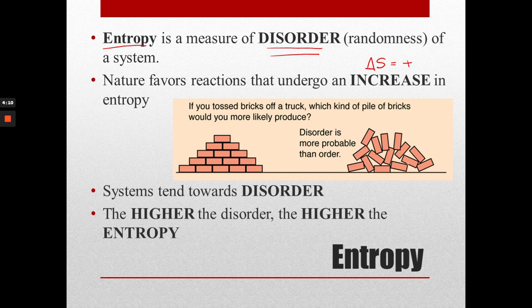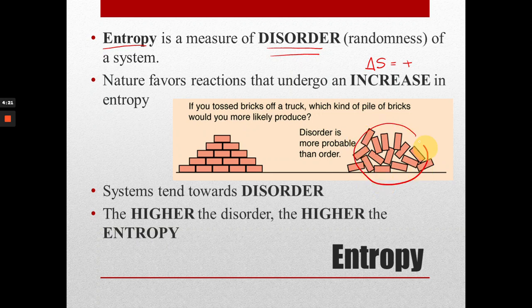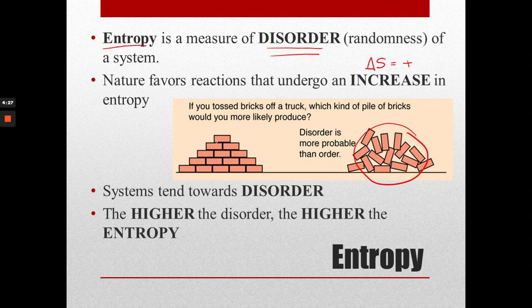And this is a common example that you will see. If you were to take a load of bricks off of the back of a truck, what kind of pile would you most likely produce if you just dumped them? This one. This is the natural way that they would probably fall. They're not going to fall in a nice, neat stack. That's not how nature works. This is how man works. We plan cities and we plan our homes to be nice and orderly, but the natural state of things is much more disordered. So systems always tend towards disorder. And the higher the disorder, the higher the randomness, the higher the entropy.